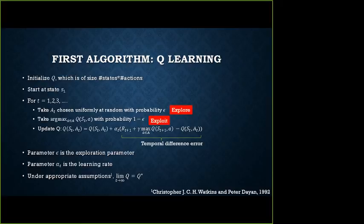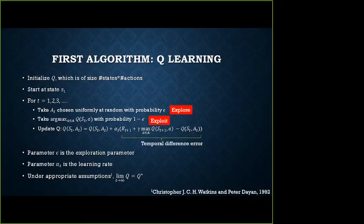Gathering information versus exploiting: known information is captured in the Q matrix, and information you don't know is what you want to gather — you try an action uniformly at random, that's the explore step. Whatever you do, once you take an action, you get a reward R_{T+1}. You update that particular entry using an update equation — a weighted moving average. It's one minus alpha_T times the previous number, plus alpha_T times a new number. The new number depends not just on the immediate reward you saw, but also the value at the next state S_{T+1}.